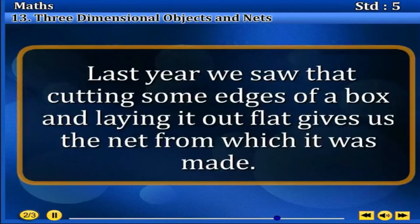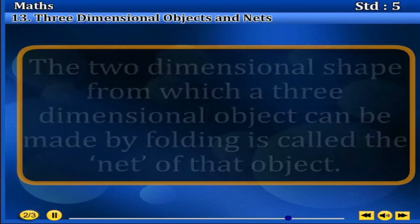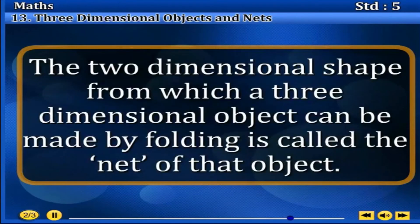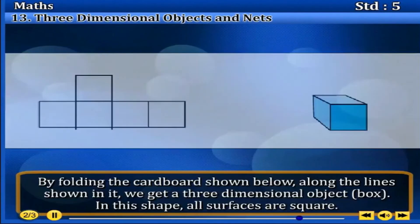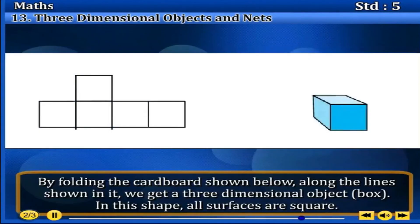Last year, we saw that cutting some edges of a box and laying it out flat gives us the net from which it was made. The two-dimensional shape from which a three-dimensional object can be made by folding is called the net of that object. By folding the cardboard shown below along the lines shown in it, we get a three-dimensional object — a box.